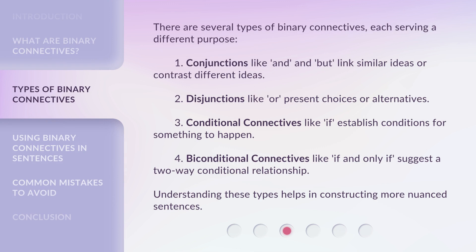There are several types of binary connectives, each serving a different purpose. First, conjunctions like 'and' and 'but' link similar ideas or contrast different ideas. Second, disjunctions like 'or' present choices or alternatives. Third, conditional connectives like 'if' establish conditions for something to happen. Fourth, biconditional connectives like 'if and only if' suggest a two-way conditional relationship.